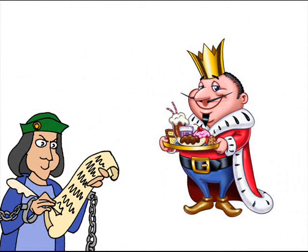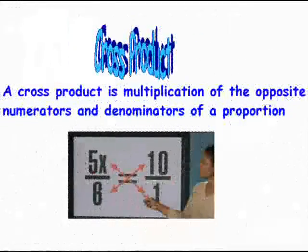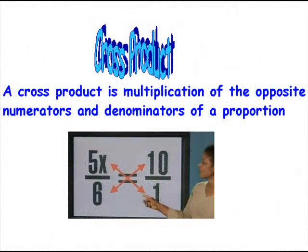The king asked his mathematician how to solve proportions so that he knows how much of each person's possessions he can take. The king's mathematician explained that a proportion could be solved using a cross product — the multiplication of the opposite numerators and denominators of a proportion.